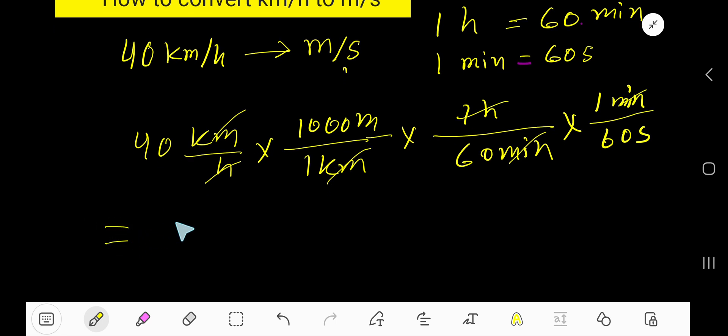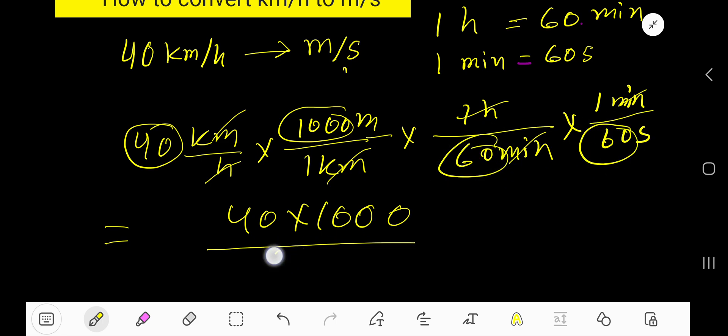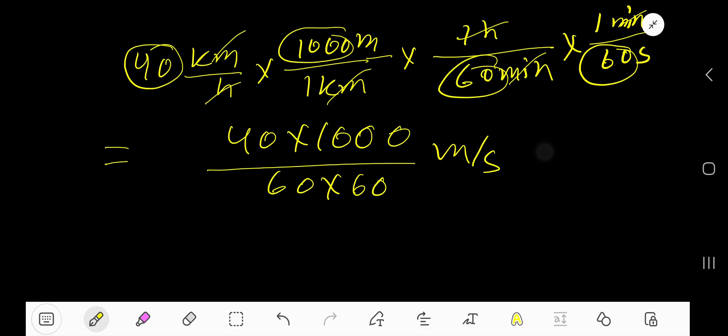Now, multiply top number. Here, 40, 1000. Divided by 60, 60. Here meter, here second. Now, cancel this 0, this 0, then this 0, this 0.